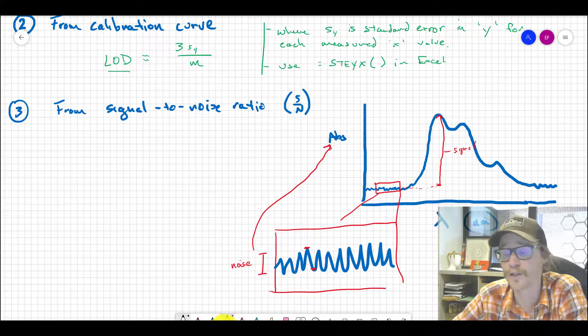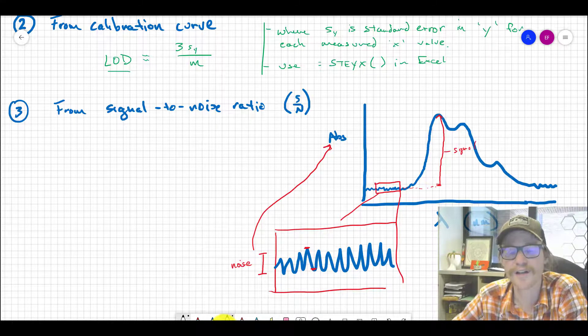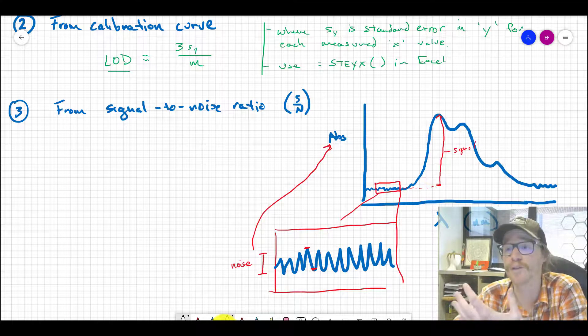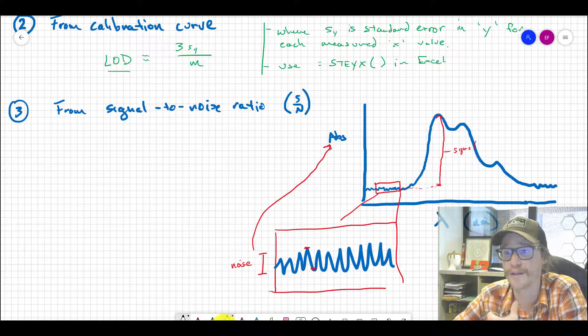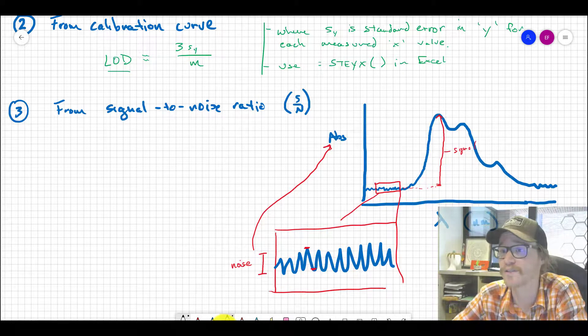For any measurement, we want to maximize our signal-to-noise ratio because that gives us better resolution of our actual signal relative to the noisy background. If we have a really small signal relative to noise, how do we know it's a real signal and not just continuation of noise?